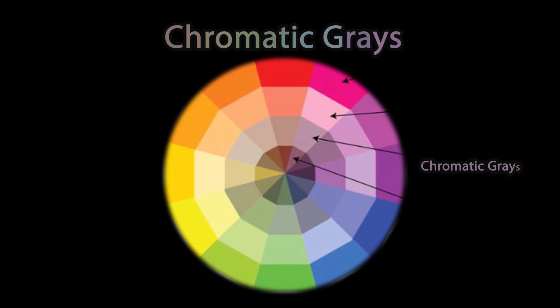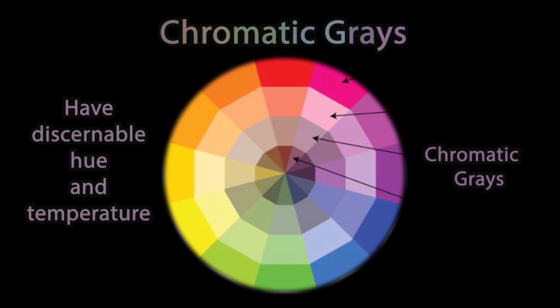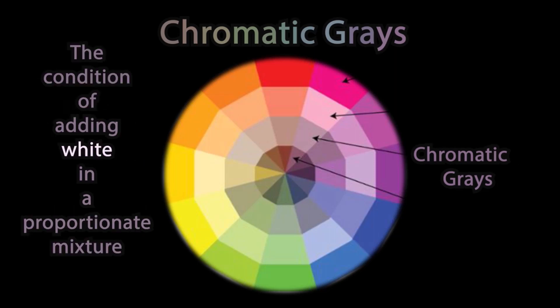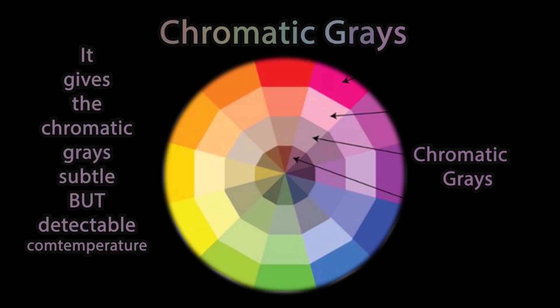Chromatic grays. Chromatic grays have discernible hue and temperature. The condition of adding white in a proportionate mixture. It gives the chromatic grays subtle but detectable con-temperature.